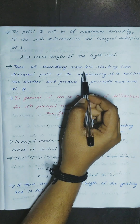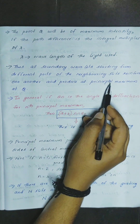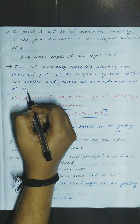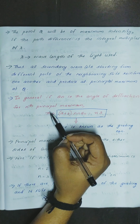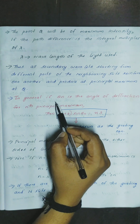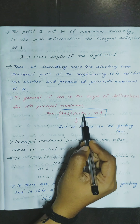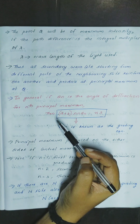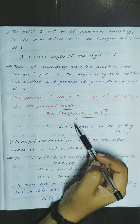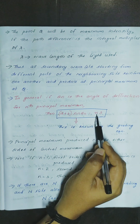Thus all secondary wavelets starting from different points of neighboring slits reinforce one another and produce a principal maximum at Q. In general, if theta n is the angle of diffraction for the nth principal maximum, then A plus B sin theta n is equal to n lambda.